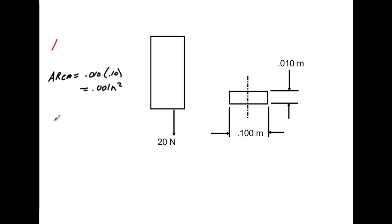So, what we could say would be just P over A, this stress, would equal 20 over 0.001 meters squared. And when we do that, we get a value of 20,000 pascals, or newtons per meter squared. Alright, so we got that.